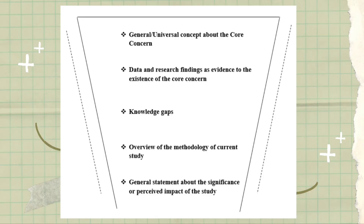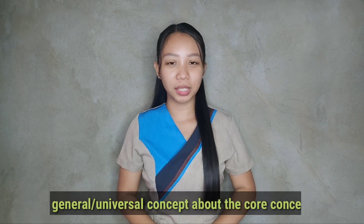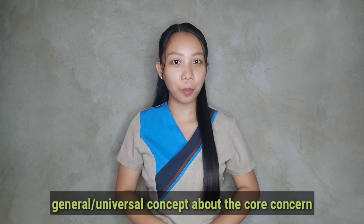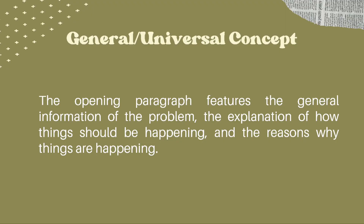Check out this illustration. The first component is the general or universal concept about the core concern. The opening paragraph features the general information of the problem, the explanation of how things should be happening, and the reasons why things are happening.